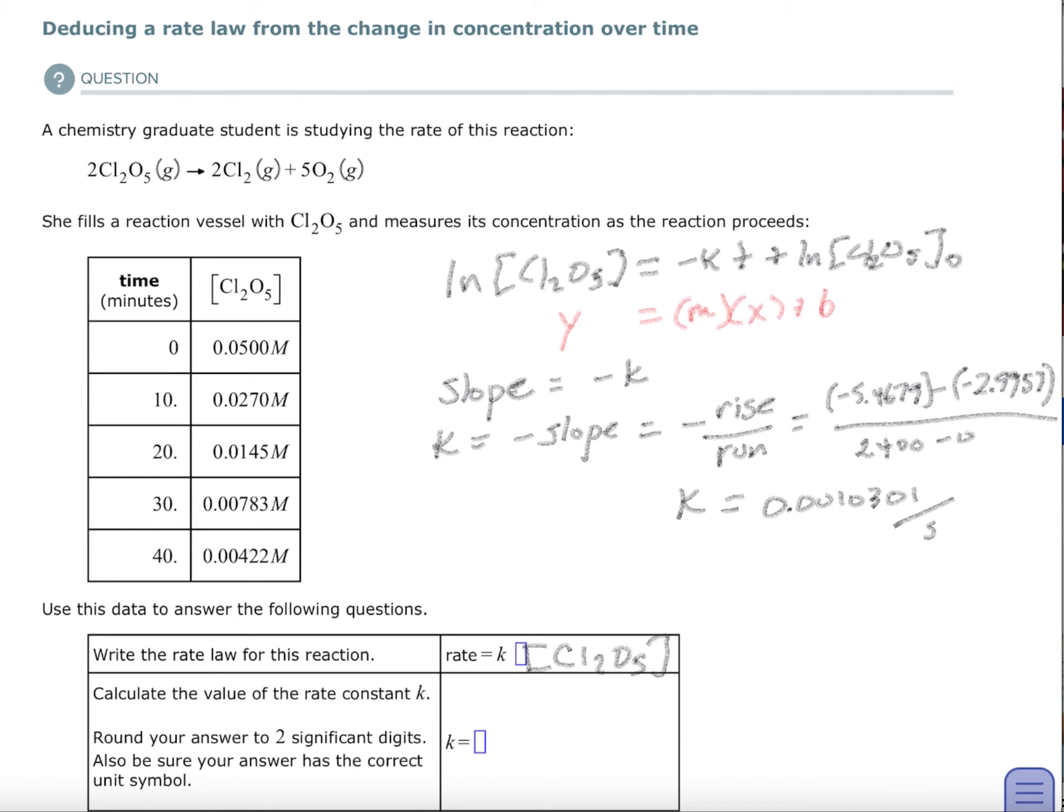The second part, I'm going to need k. So I remember that k is my, negative k is my slope. Well, if negative k is my slope, then k is equal to the negative slope. And the slope is the rise over the run. My rise, my run is my time. And my rise was the numbers that I made when I took the natural log.